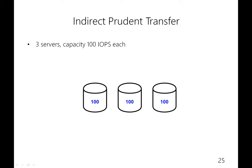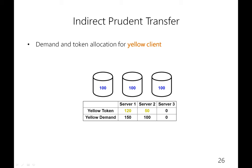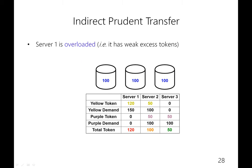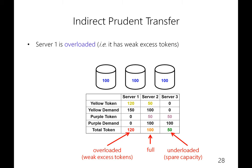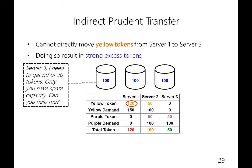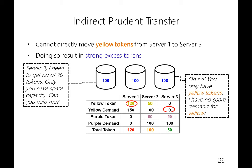Let me illustrate the idea of indirect prudent transfer with the following configuration. We have three servers of 100 IOPS each and two clients — these are the demand and tokens for the yellow client, and this is the demand and tokens for the purple client. The allocation is prudent because no token allocation exceeds the corresponding demand. However, if we sum up the number of tokens on each server, server 1 is overloaded, server 2 is full, and server 3 is underloaded, meaning we have weak excess tokens on server 1. We cannot directly move tokens from server 1 to server 3, because on server 1 we only have yellow tokens, but on server 3 there are no yellow demands — directly moving them would generate strong excess tokens, which is not desirable.